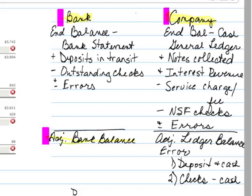Another item that we might have would be a deposit of a customer check where there are not sufficient funds, NSF, to cover that check. As a result, we made the deposit, and now we need to remove it — it becomes an accounts receivable rather than a payment on their account. As a result, we will have our adjusted ledger balance.